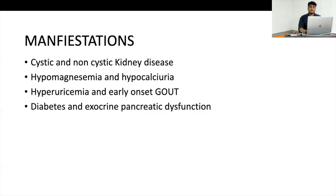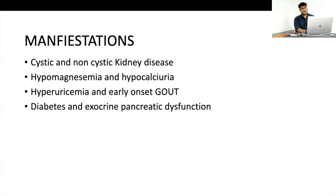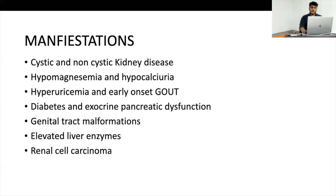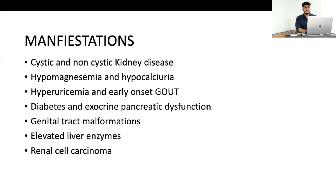Treatment is variable — patients may respond to minimal medications or may require high-dose insulin. Other rarer manifestations include genital tract malformation, asymptomatic liver enzyme elevation, possible association with renal cell carcinoma, and rarely mental retardation and autism. Suspect HNF1B defect when early-onset diabetes occurs alongside renal cysts (after ruling out autosomal dominant polycystic kidney disease), when renal cysts and diabetes occur together, and when hyperparathyroidism or hypomagnesemia is disproportionate to the degree of renal insufficiency.